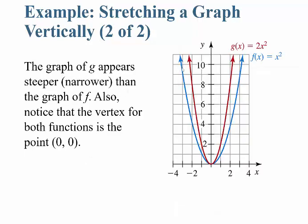You can see that the graph of f of x looks like a nice U, with the vertex at the turning point 0, 0. The red graph of 2x squared looks skinnier — it fits on the inside.